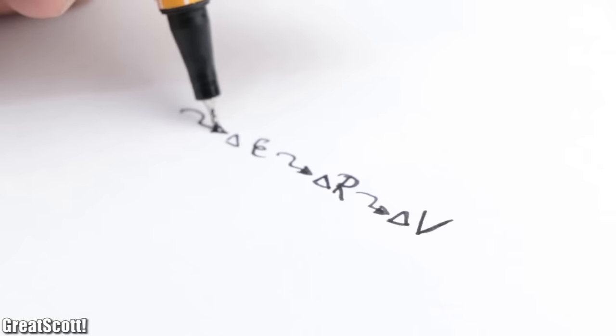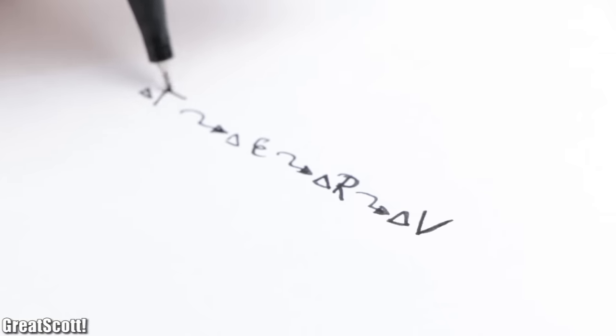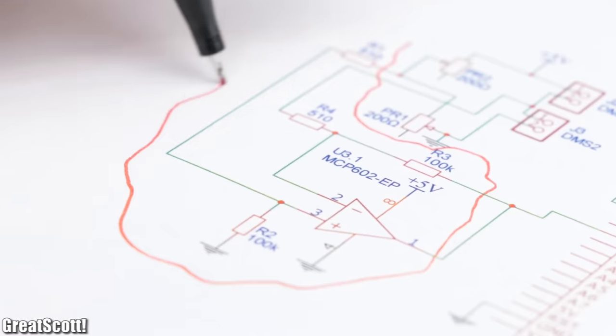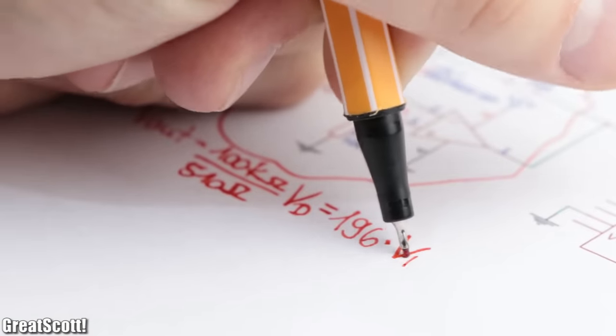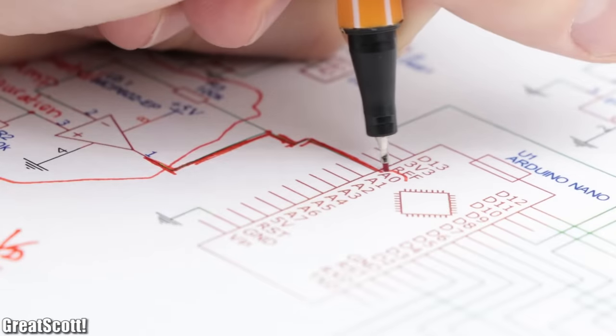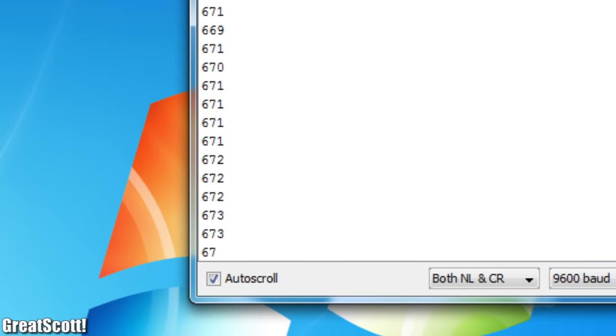That means we successfully converted the change in resistance into a voltage that we could now amplify with a differential op amp configuration with a gain of, for example, 196, and then measure it with the analog to digital converter of a microcontroller.